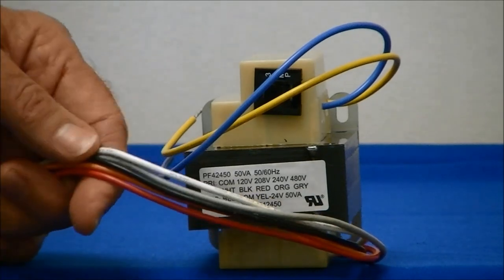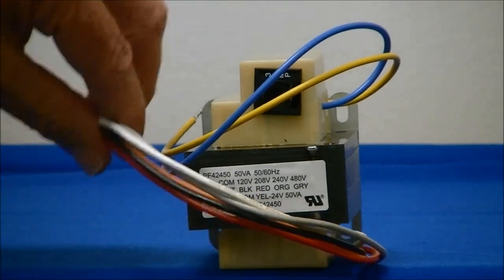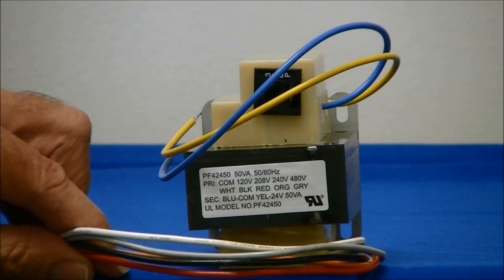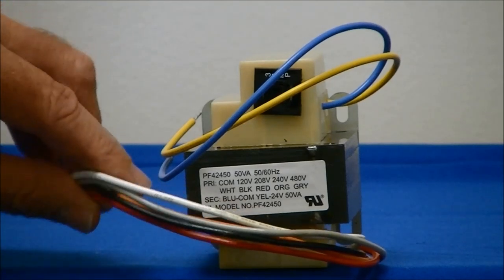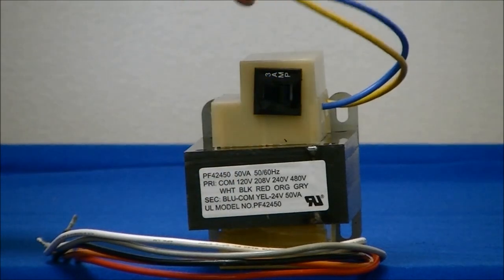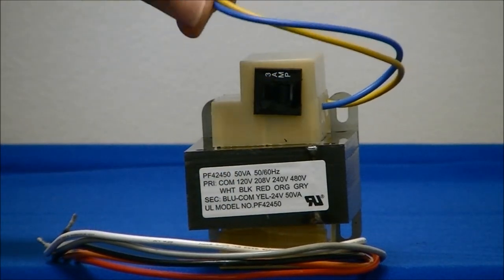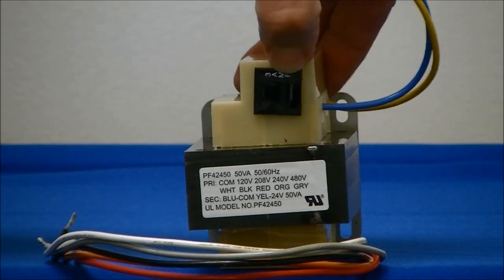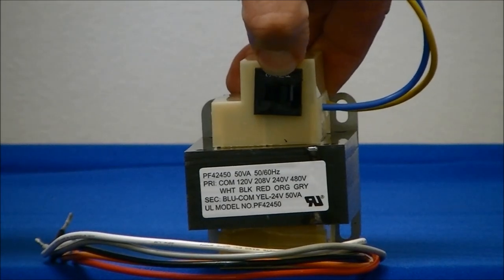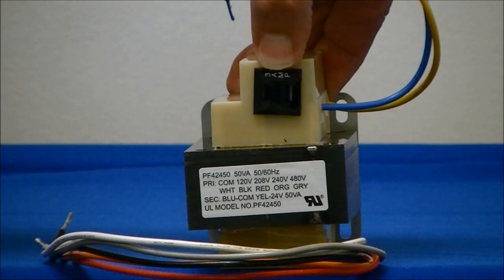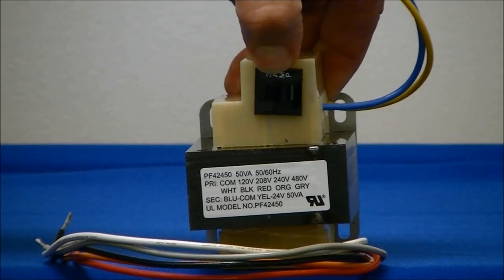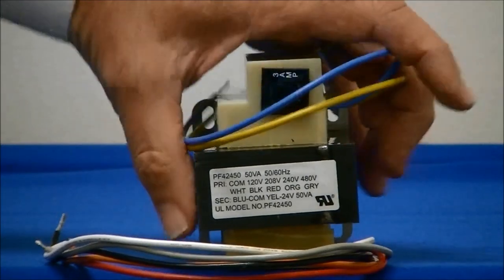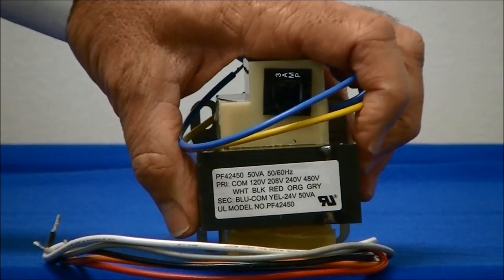Again, this particular transformer gives us multiple primary voltages. The primary voltage is the source of power that we apply to this, but it gives us a single secondary voltage, 24 volts. This transformer also has a protector so that if the load exceeds the rating of this, it will automatically trip and protect the transformer from burning up.